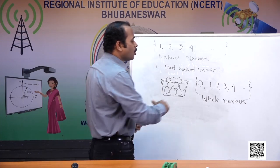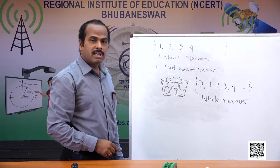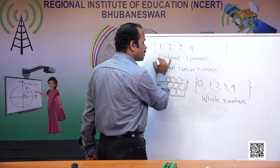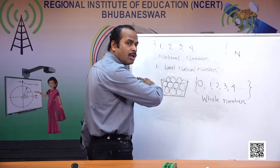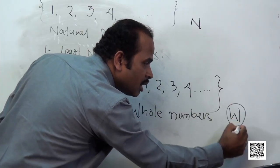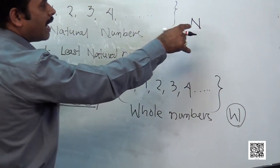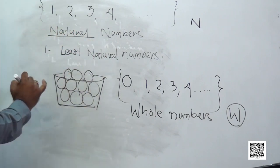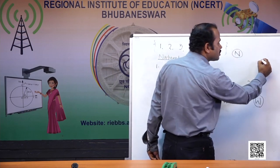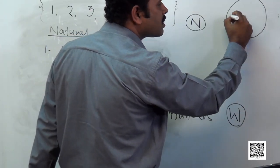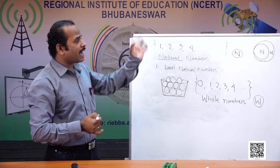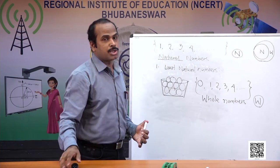We find that natural numbers are also inside whole numbers — whole numbers contain the natural numbers. If all natural numbers are collected and kept in a set, that set is called the natural number set, denoted by N. Similarly, when all whole numbers are collected and kept in a set, it is the whole number set, denoted by W — W coming from the word 'whole'. N comes from 'natural'. All whole numbers contain natural numbers, so N is inside W. Outside N and inside W, what is left is zero.